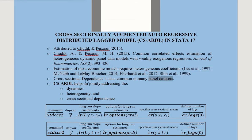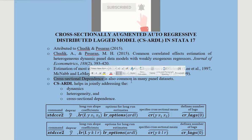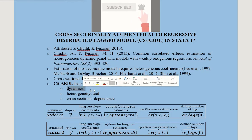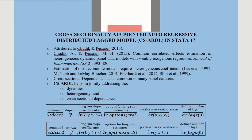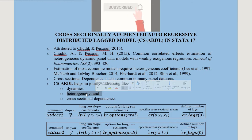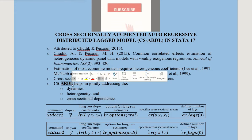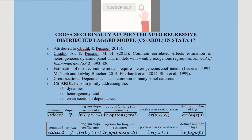Moreover, in panel data we find cross-sectional dependence extensively. So in situations where we have dynamics — that is, changes over time — along with heterogeneity in slope parameters and cross-sectional dependence, CS-ARDL is suitable. ARDL captures the dynamic side of things, and the cross-sectional augmentation makes it suitable when cross-sectional dependence is present.